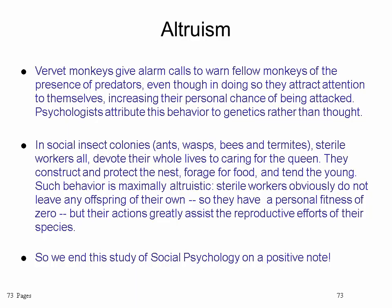In social insect colonies — ants, wasps, bees, and termites — every single worker is sterile. The only one who produces eggs and continues the colony is the queen, but the workers do all the work to ensure the colony survives, giving up total reproductive fitness for the colony's benefit. Such behavior is maximally altruistic — their actions greatly assist the reproductive efforts of their queen and species. And so we end the study of social psychology on a positive note on altruism.